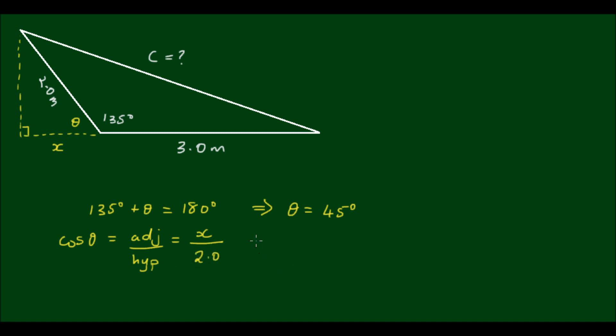I can rearrange this equation to solve for x. So x equals 2.0 times cos 45°. I know that cosine of 45 degrees equals 1 divided by the square root of 2. Therefore, x equals 2 divided by the square root of 2 meters.